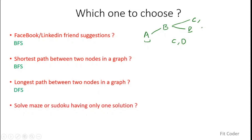To solve a maze or Sudoku that has only one solution, we try all the paths and when we meet a dead end, we backtrack and try another path. This is an ideal situation for DFS traversal because in DFS we also go along a path, and when we meet a dead end or already visited node, we backtrack and try another path. So for maze or Sudoku with only one solution, DFS is the most preferred algorithm.